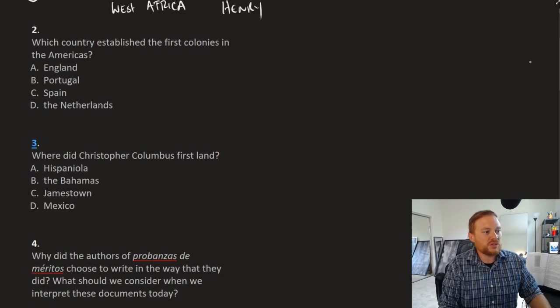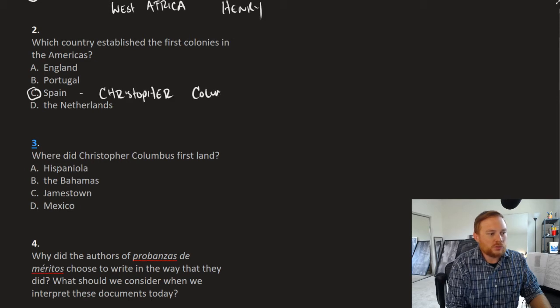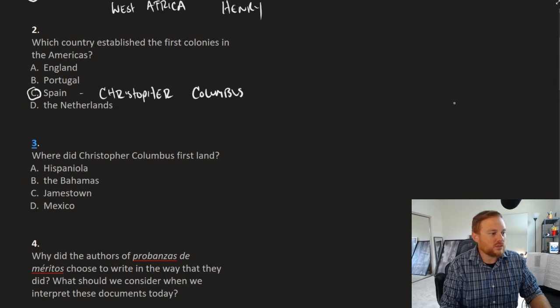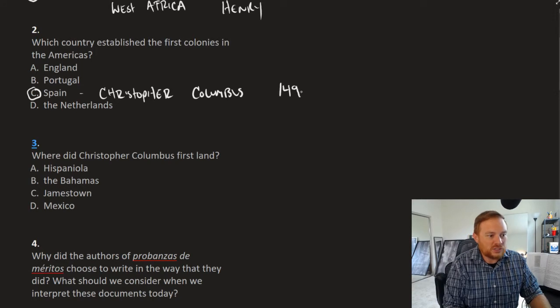Question number two, which country established the first colonies in the Americas? C, Spain. This, of course, is Christopher Columbus. You should be able to get this answer correct. The Spanish were the first ones to the New World, 1492.